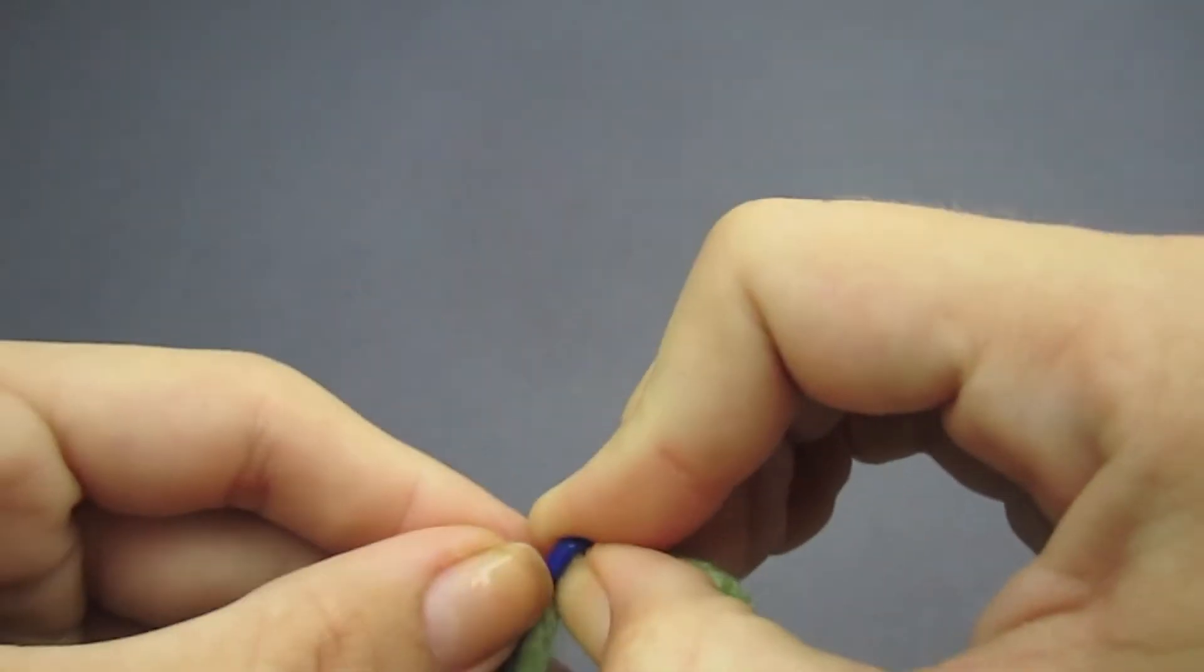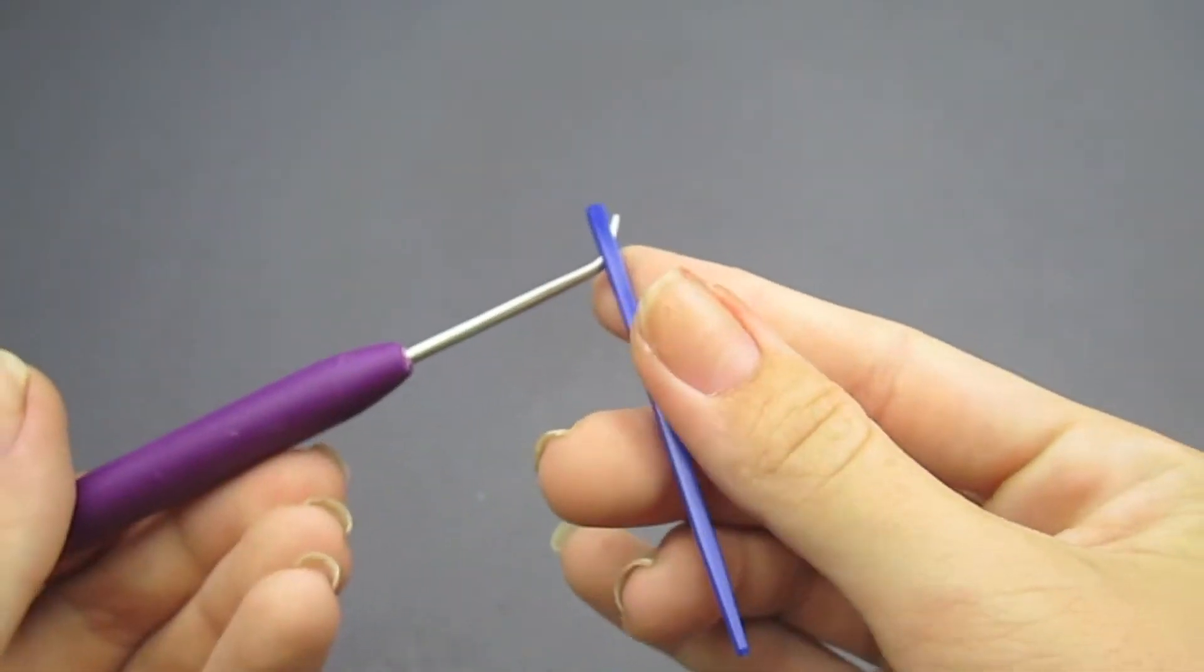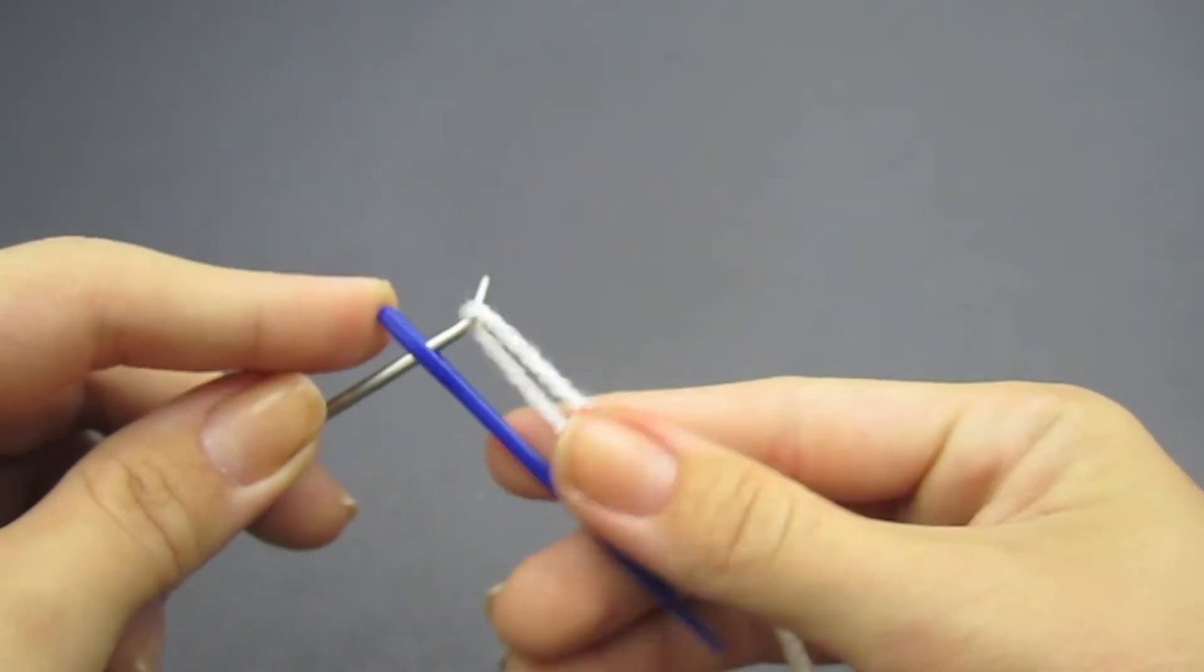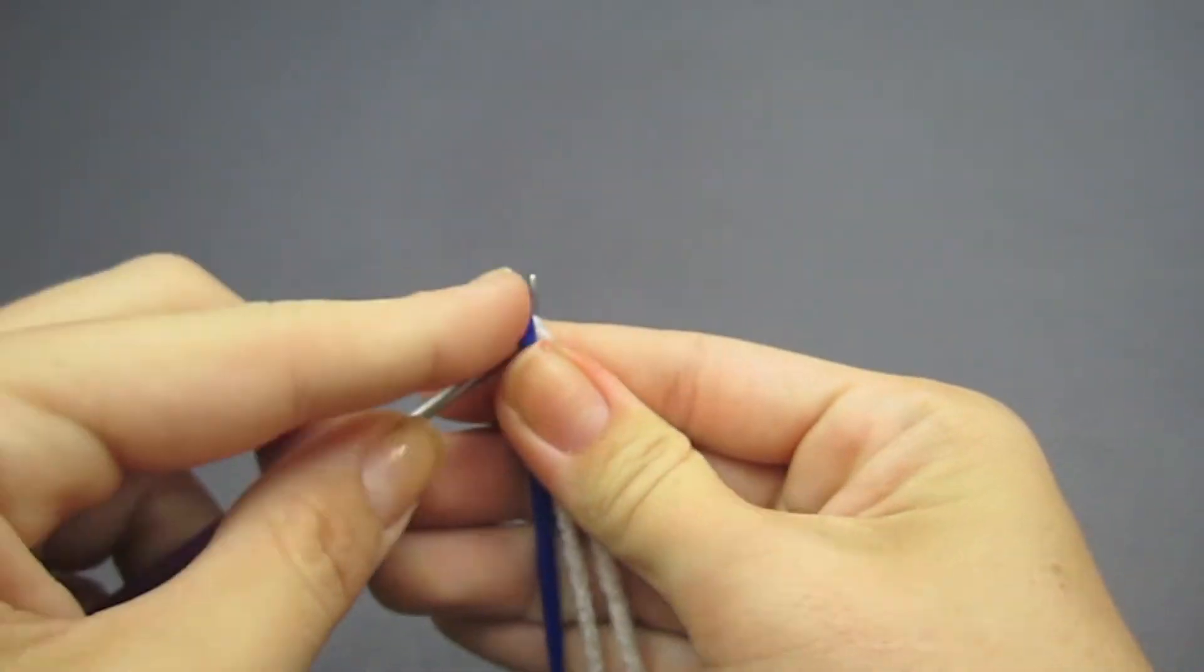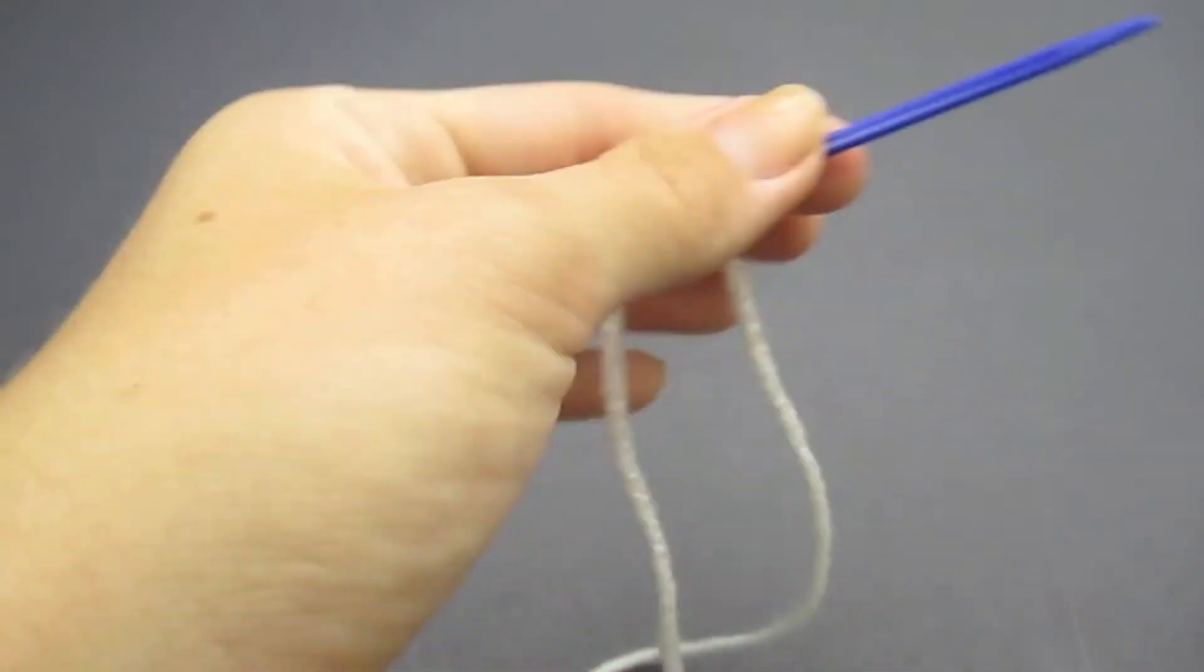Are you constantly frustrated when you have to thread a needle? Simply insert a purple hook into the eye of the plastic needle. Loop yarn around the end of the purple hook and shimmy it through the plastic needle. You'll be sewing again in a minute.